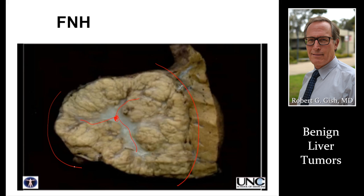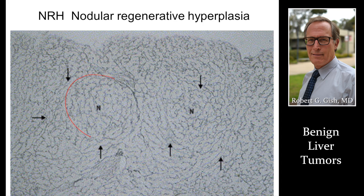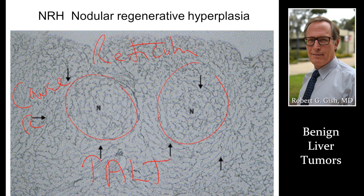There's no cancer risk with FNH and no reason to stop hormone supplements if there's another indication. Nodular regenerative hyperplasia occurs when there's an autoimmune condition, increased coagulation, or medications involved. Under a microscope it is diagnosed by what's called a reticulin stain, and it can be a cause of elevated liver enzymes. You really want to look for the cause and treat the cause in this diagnosis.